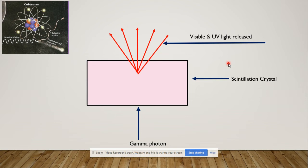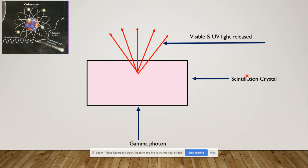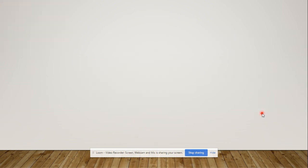The phenomenon responsible here is the Compton effect. In the Compton effect, when a high-energy gamma photon hits the crystal, it converts into a low-energy photon. So the high-energy photon is absorbed by the crystal and converts into low-energy visible light photons.